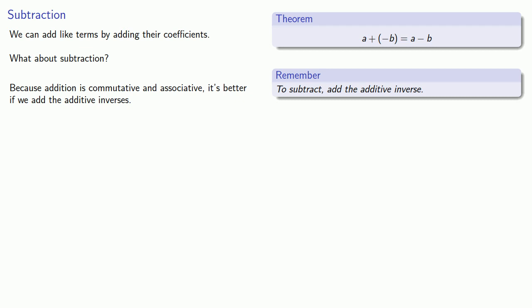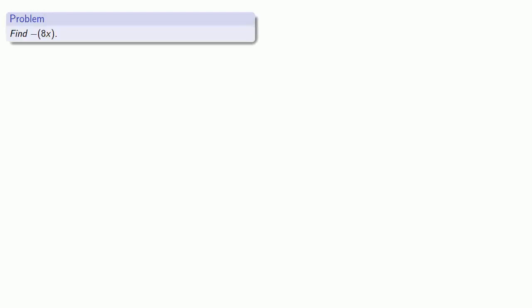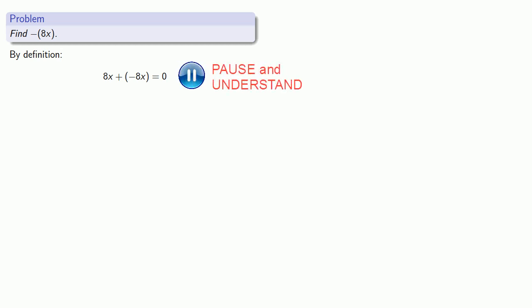The only problem is: what is the additive inverse of a term? Let's tackle that problem. We want to find the additive inverse of 8x. By our definition, if we take 8x and add the additive inverse of 8x, we get 0. Since we're able to add these terms, they must be like terms — their variable portion has to be the same. So both must be something times x, which means we can apply the distributive property, giving us 8 plus something times x equals 0.